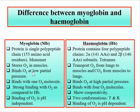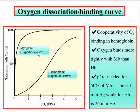Myoglobin binds oxygen at low partial pressure, as seen from its oxygen binding curve, while hemoglobin binds oxygen at high partial pressure. The oxygen dissociation curve for myoglobin is hyperbolic, while that of hemoglobin is sigmoidal, which shows that hemoglobin exhibits cooperativity of oxygen binding. The oxygen binding affinity in hemoglobin is less than that of myoglobin.